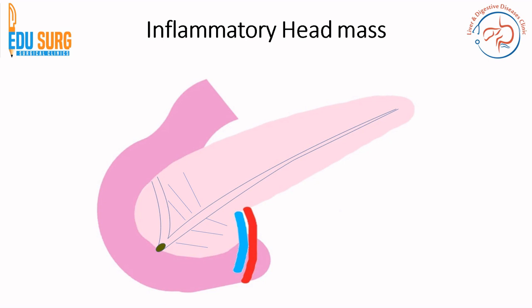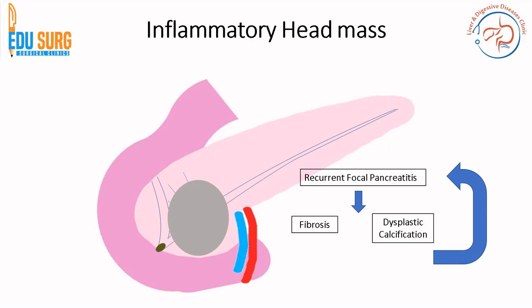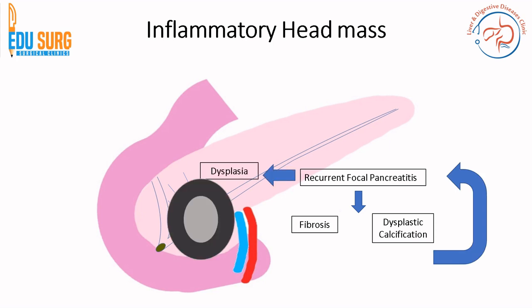An interesting phenomenon in chronic pancreatitis is the development of an inflammatory head mass. The head region has a dense network of side branches, which are obstructed by protein plugs and calcifications, leading to recurrent focal pancreatitis. This recurrent focal pancreatitis causes localized fibrosis and dysplastic calcification, and this cycle propagates itself until it develops into dysplastic epithelium in the pancreas, ultimately leading to pancreatic cancer.